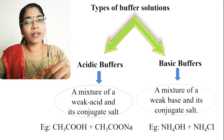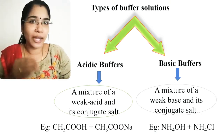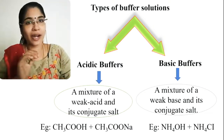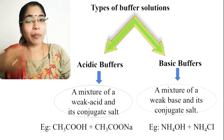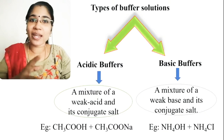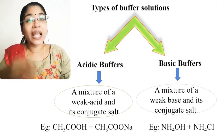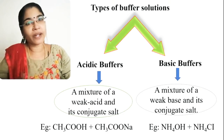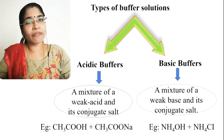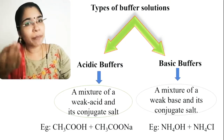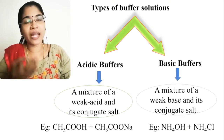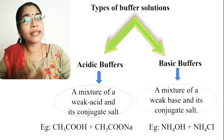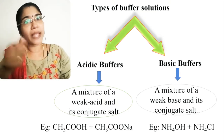What are acidic buffers? Acidic buffers are a mixture of a weak acid and its conjugate salt. Basic buffers are a mixture of a weak base and its conjugate salt. For example, NH4OH plus NH4Cl is a basic buffer.